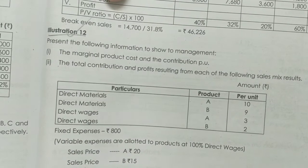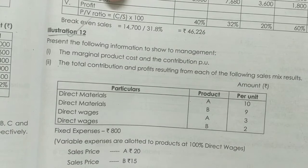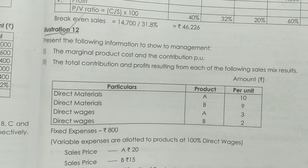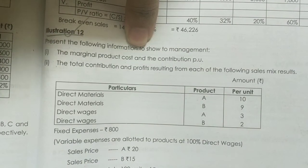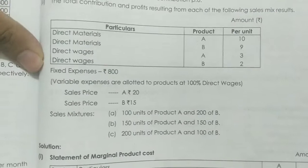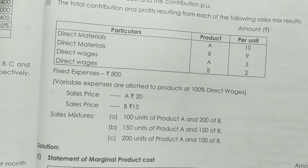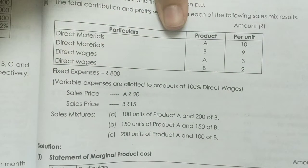Present the following information to show to management: marginal product cost, contribution per unit, total contribution and profit resulting from each of the following sales mix. There are two products, AM and BM.